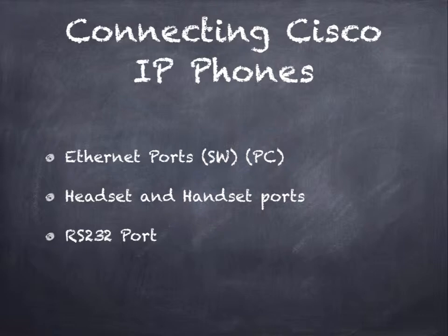There are also two RJ11 ports — smaller connectors similar to RJ45 — and these ports will have a symbol for a headset and a handset. The headset is a device that sits on your head with a speaker and microphone, used for hands-free communication. There is also a handset port where the traditional phone handset plugs in. Another port is the RS-232 port, sometimes called an option port or peripheral port. It is for adding additional components to the phone, like a second dial pad or a lighted pad of buttons to reach multiple departments or add additional lines.